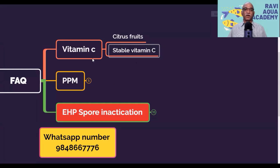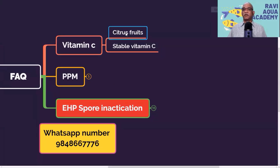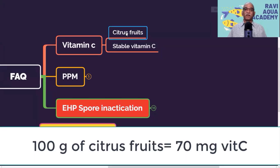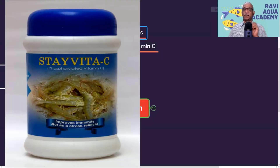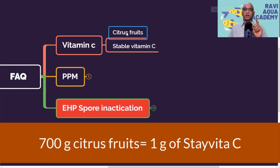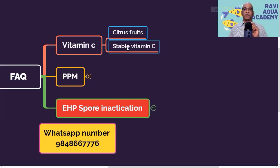Coming to vitamin C — yes, you can use citrus fruits, but there is no advantage. Every 100 grams of citrus fruits contains only 70 milligrams of vitamin C. On the other hand, one gram of stable vitamin C contains 350 milligrams — almost 7 times more. So to replace 1 gram of vitamin C you would need 700 grams of citrus fruits, which is why there is no advantage in using citrus fruits; it is not economically viable.